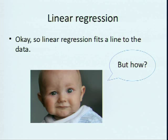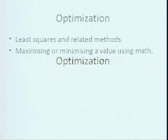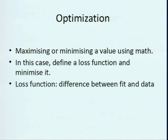But how does it do it? This is the optimization. The way that you're getting the parameters of that line that you're putting through the data, it's really a question of optimization. Least squares is one of the original ways to do this in regression methods. And really, optimization is maximizing or minimizing a value with math or some numerical technique. So in this case, it's defining a loss function and minimizing that loss function in some way. The loss function here is the difference between my data, so my firing rates, those fake firing rates, and the fit between them.